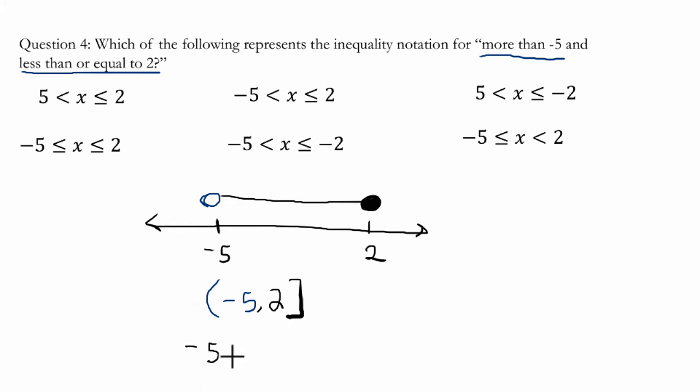we write like this: x has to be bigger than negative 5, write that first, and then it also has to be less than or equal to 2. The choice that matches it is right here.